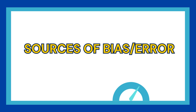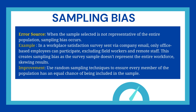Now, what are the various sources of bias or errors in data? Let us take them one by one. First is sampling bias. The error occurs when the sample data selection is not representative of the entire population. For example, in a workplace satisfaction survey where a company sends an email only to office-based employees, excluding field workers and remote staff — that creates a sampling bias, as the survey sample does not represent the entire workforce.